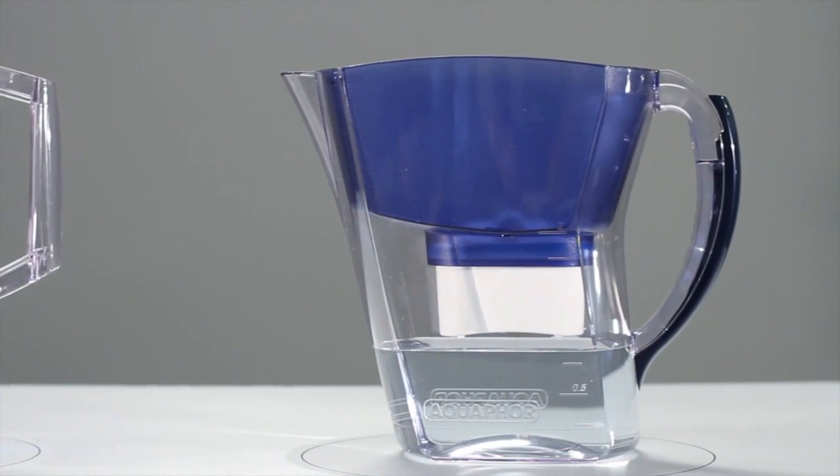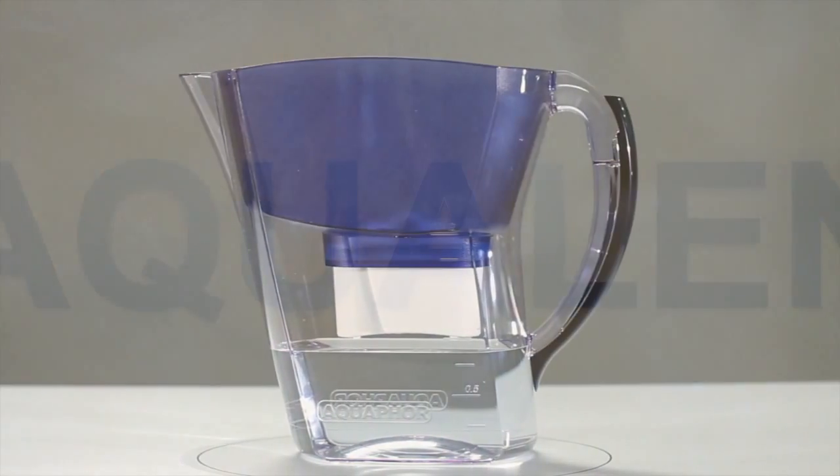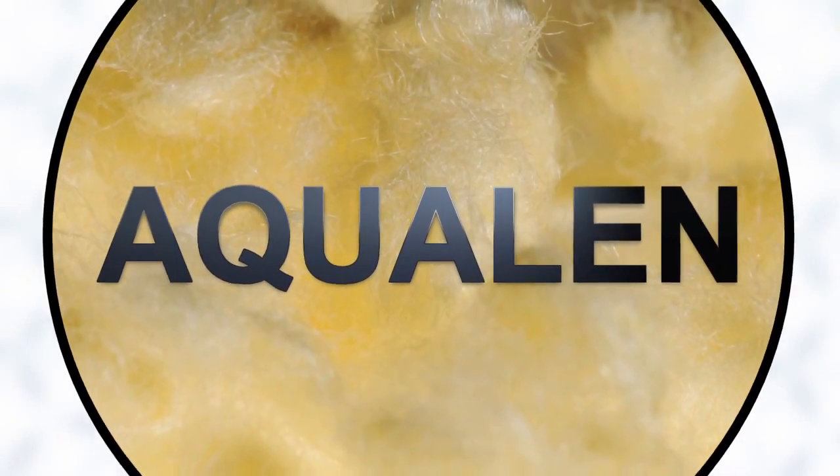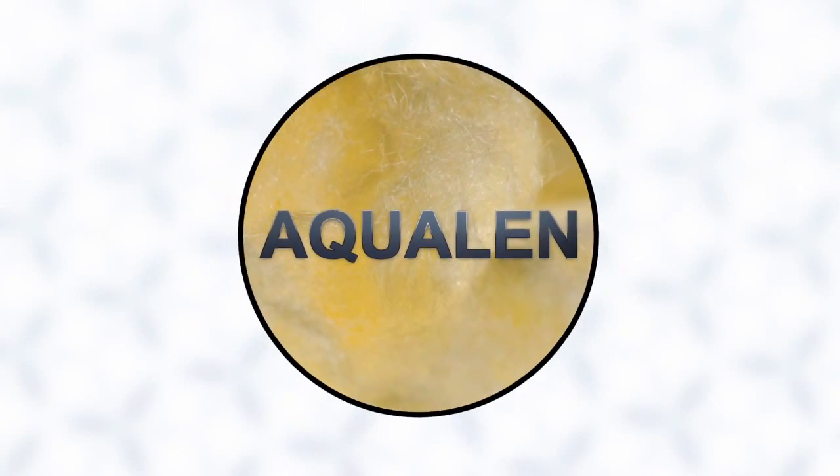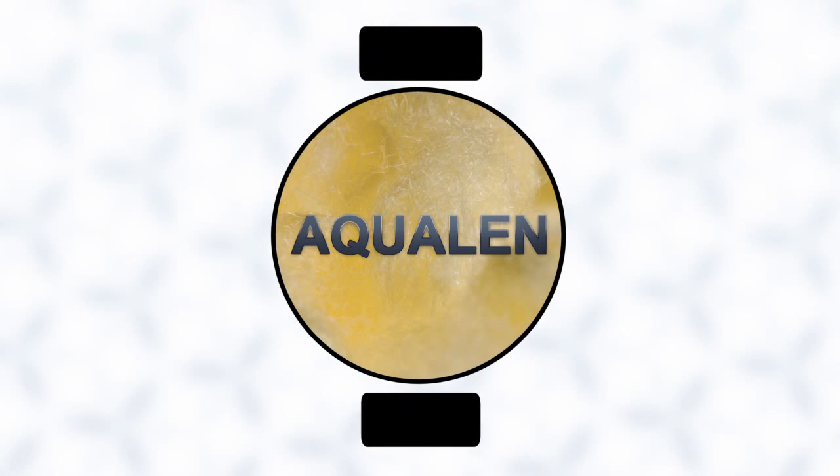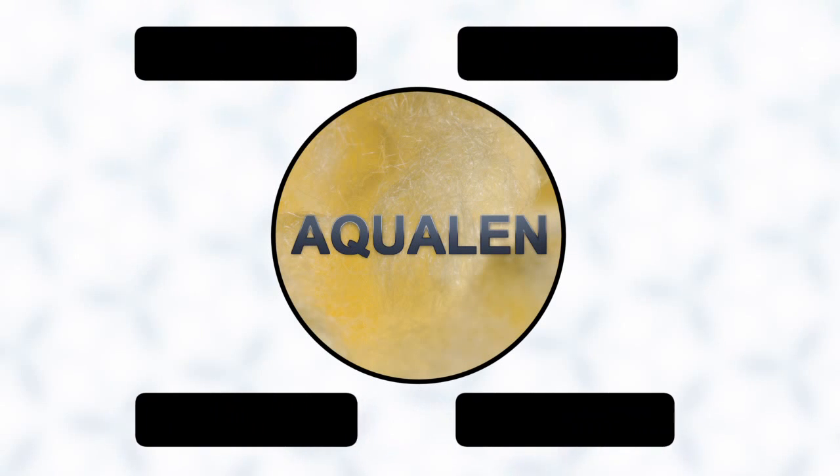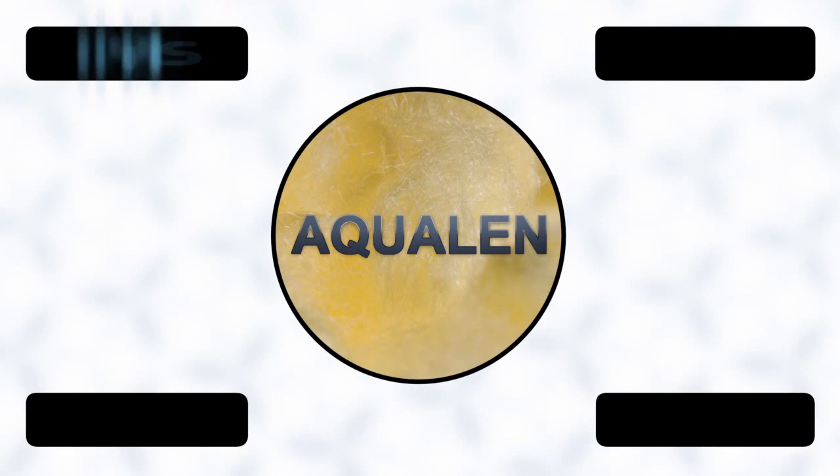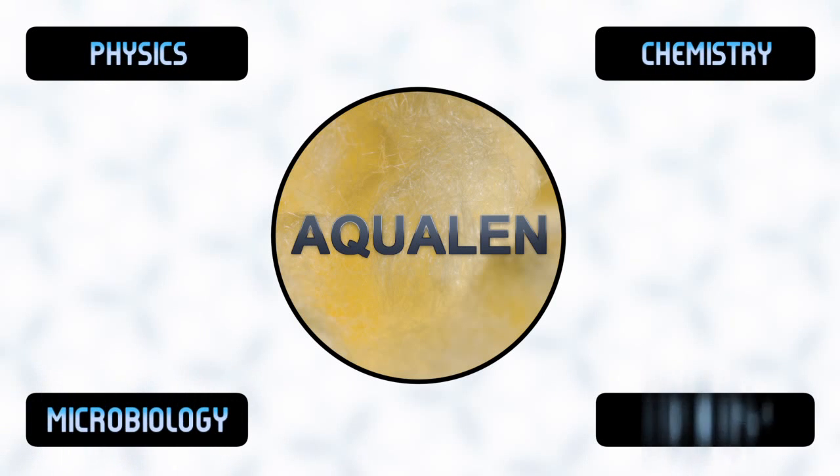So what is this amazing Aqualan fiber? Aqualan is a state-of-the-art fibrous chelating ion exchange material. Its effect on the filter's performance falls into four main aspects: physics, chemistry, microbiology, and synergy.